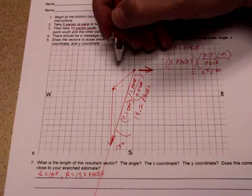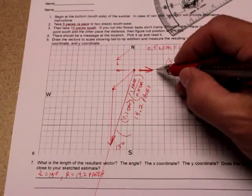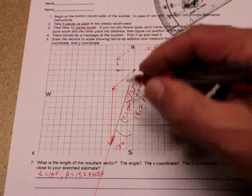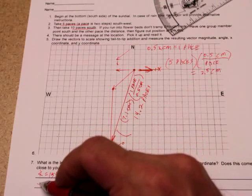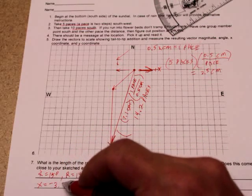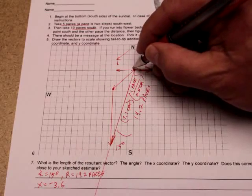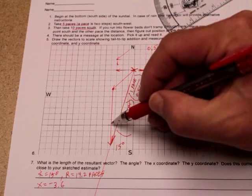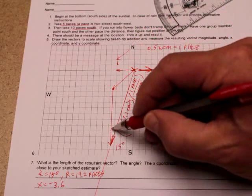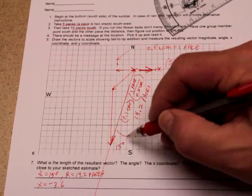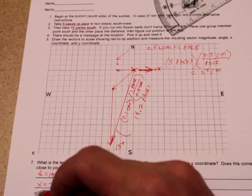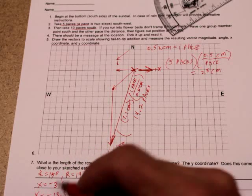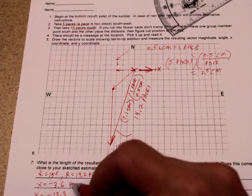Now, we also want to know how far do you go over in the x direction. Well, it's in the negative x direction. This is a positive x. So, we're going negative about 3.6. X coordinate, negative 3.6 from where we started. Y coordinate, 5, 10, 1, 2, 13, and a little bit. 13.3 paces. They're all in paces.